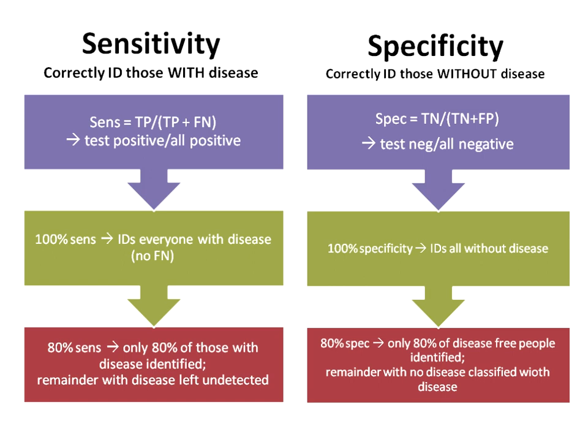If you put numbers on this: with 100% sensitivity, everybody gets identified — no false negatives. If you have 80% sensitivity, only four-fifths of those with the disease will be identified, and everybody else is left as undetected. They have the disease, but from our test point of view they are disease-free, even though from a clinical point of view they have it.